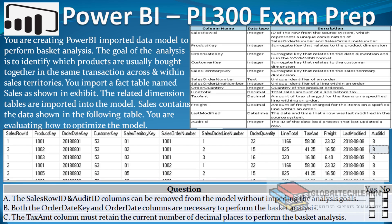The next question asks: are both order date key and order date columns necessary to perform the basket analysis? We can say that order date key and order date are not required, as these are not part of the critical fields to achieve market basket analysis — so the answer is no. Question C asks: must the tax amount column retain its current number of decimal places to perform the basket analysis? The tax amount field is also not required to achieve market basket analysis, so this is also marked as no — it is a non-critical field.